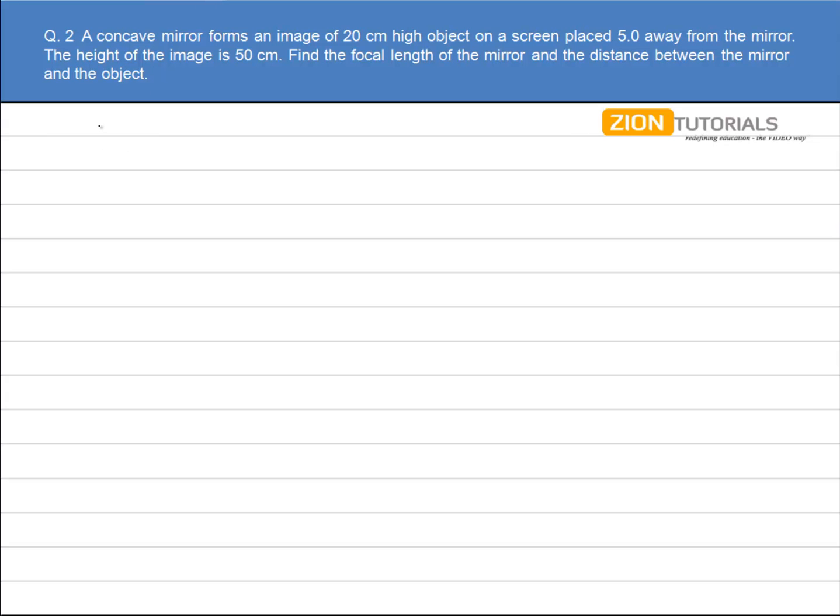First of all, we know that magnification in case of a mirror is given by minus v by u, which equals the height of image to the height of object.